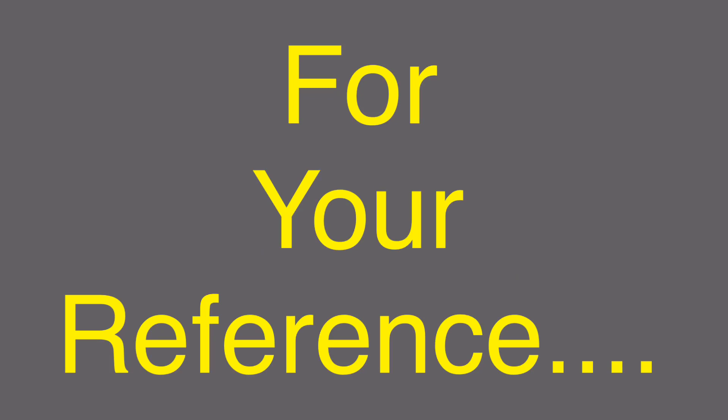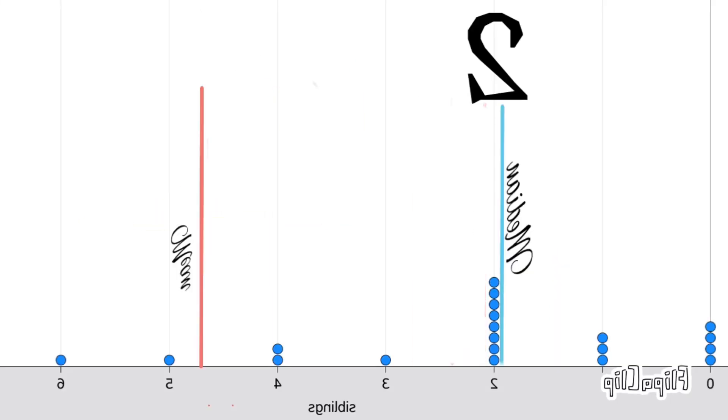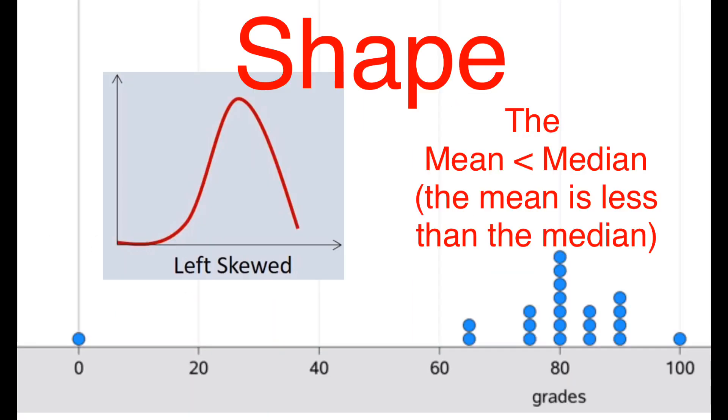For your reference, if the shape of the data was left skewed, the mean would be pulled to the left of the median, making the mean less than the median. This dot plot is an example of class grades.